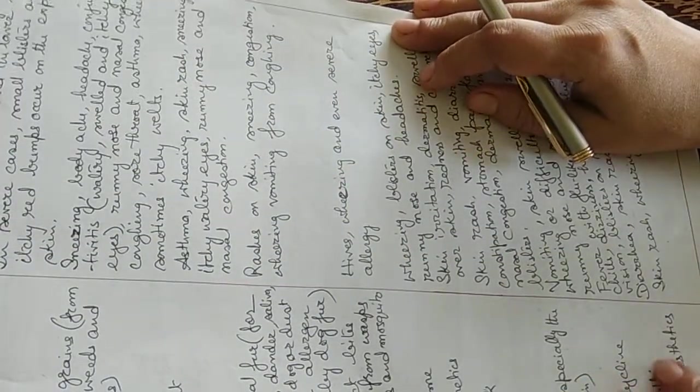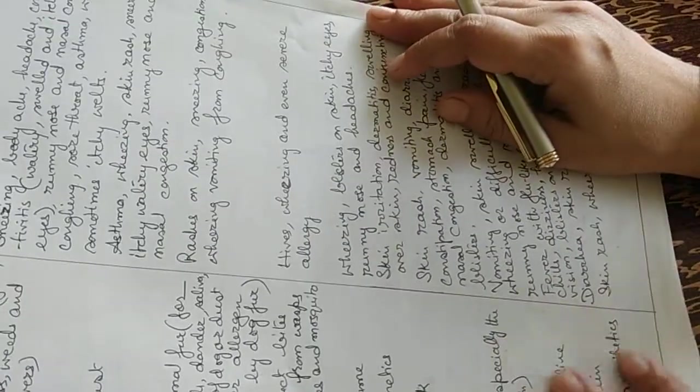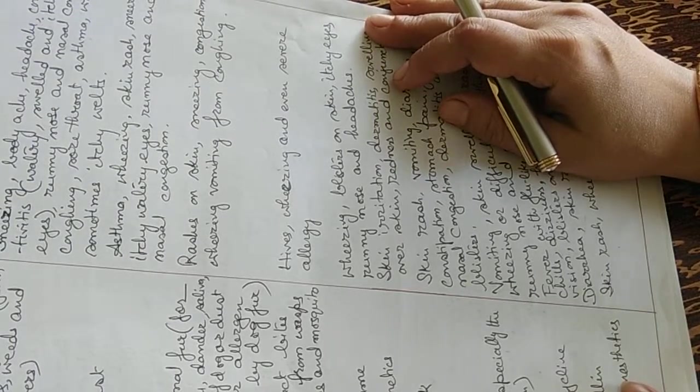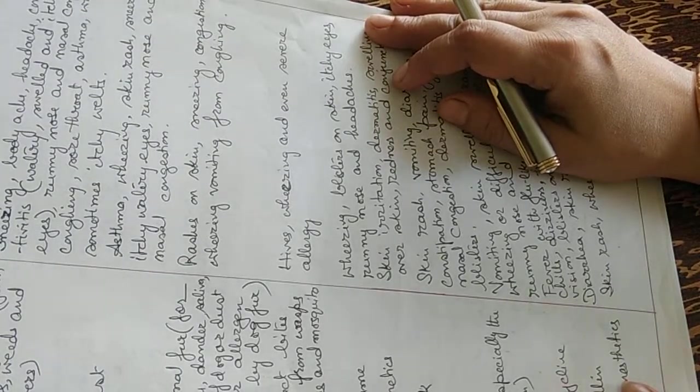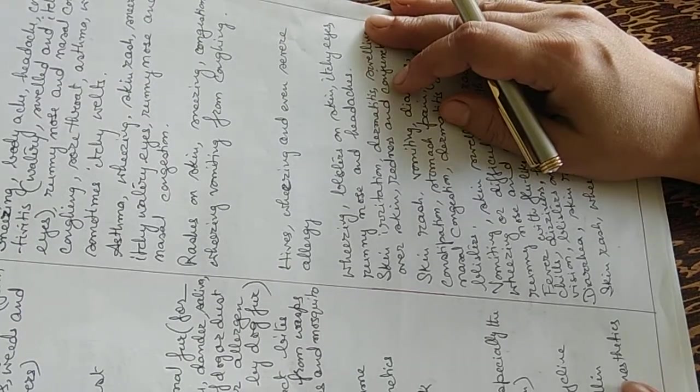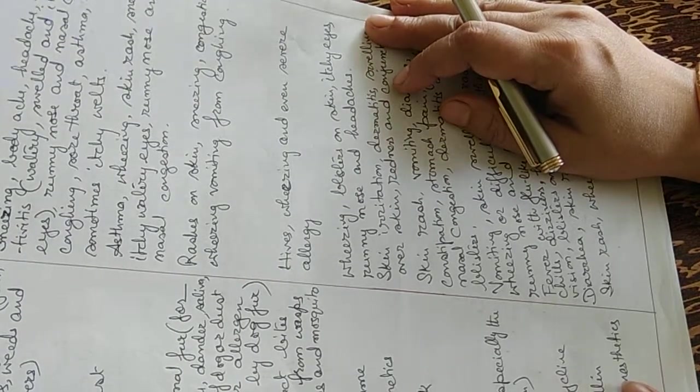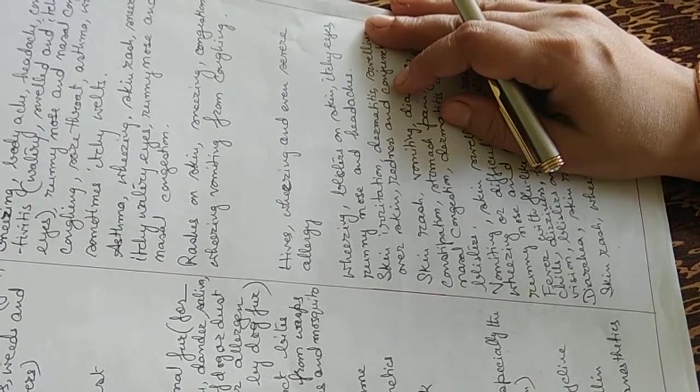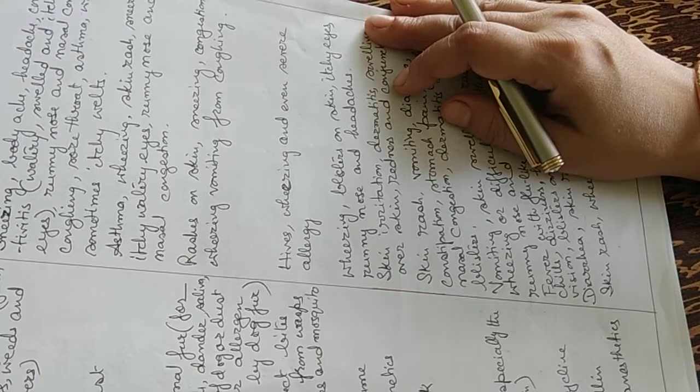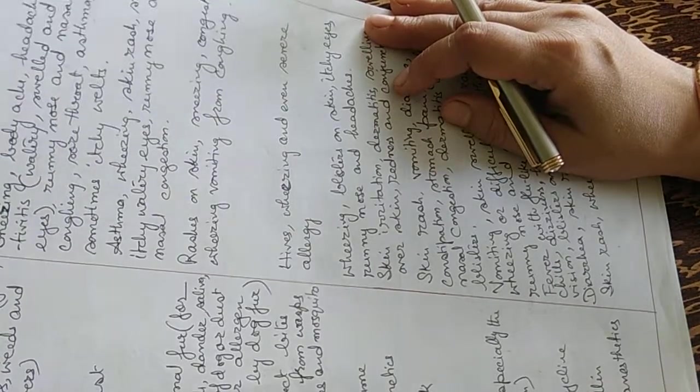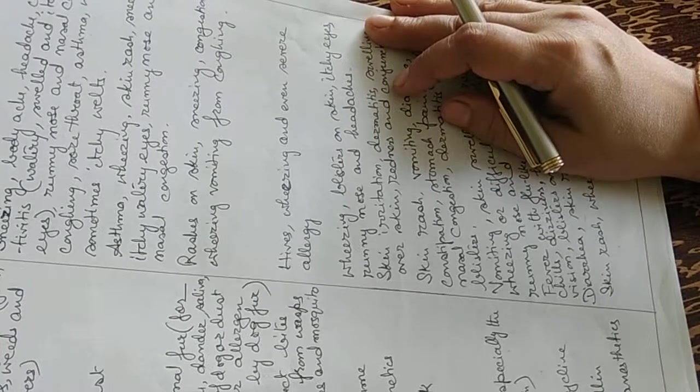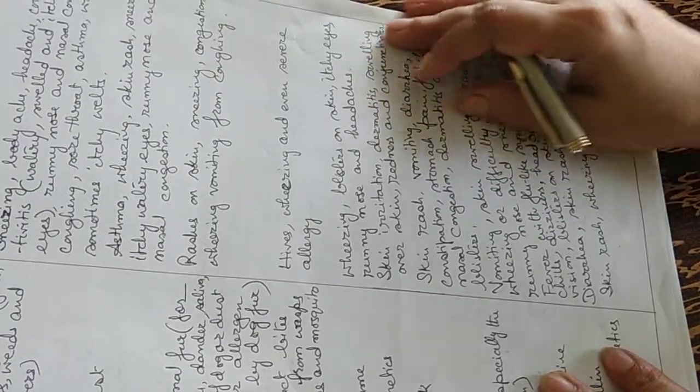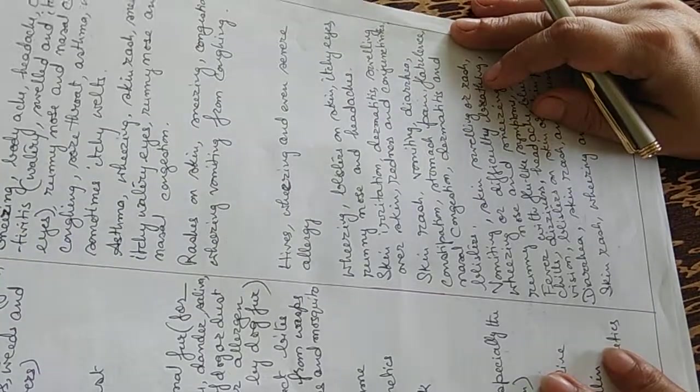Animal fur is also an allergen. For example, dander, saliva of the animal, urine of the dog or dust or other allergens carried by dog fur. These cause rashes on the skin, sneezing, congestion, wheezing, vomiting from coughing. Insect bites from wasps, bees and mosquitoes produce allergic responses like hives, wheezing and even severe allergy.